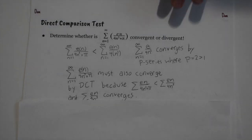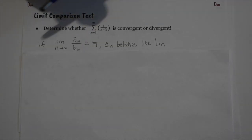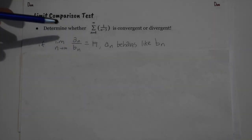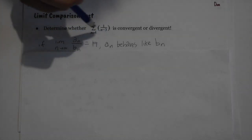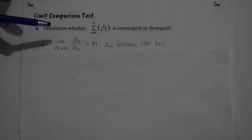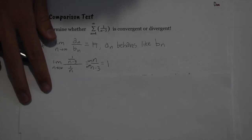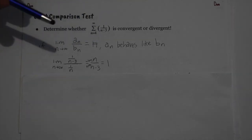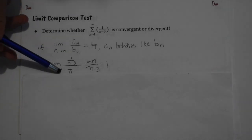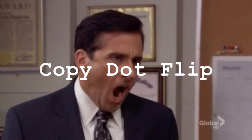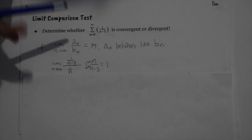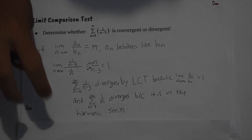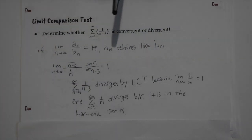The limit comparison test is more widely applicable. The logic is: if the limit of our series divided by a comparison series equals a finite non-zero number, they behave the same way. To compare 1/(n−3), I compare it to 1/n. Taking the limit — copy, dot, flip — we get 1, which is a finite number. Since 1/n diverges (harmonic series), our original series must also diverge.